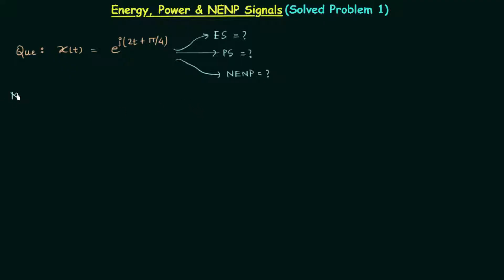Method number one involves the plot of signal x(t), and method number two requires calculating the average power of the signal. The first method is good when you have four options and need to choose one, such as in multiple choice questions. If you need to write down the full solution, as in conventional papers, then you need method number two. Let's start with method number one.